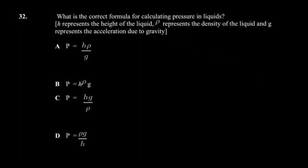The next question asks for the correct formula for calculating pressure in fluids. Here, h represents the height of the liquid, ρ (rho) represents the density of the liquid, and g represents gravitational acceleration.